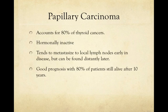The first type is papillary carcinoma, which accounts for 80% of all thyroid cancers. It is a low-grade malignant lesion that is hormonally inactive. It can occur early in life, with the most common age range being the 30s to 50s. These tumors tend to metastasize to local lymph nodes, and in later stages, distant metastases are not uncommon. They have a very favorable prognosis, with 80% of patients surviving 10 years after diagnosis.